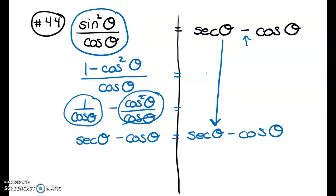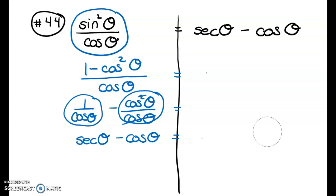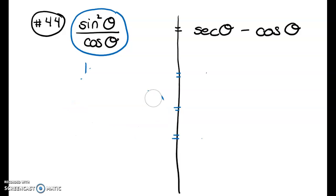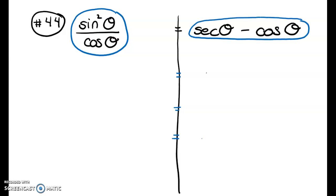Now I'll erase my work and show that this same example can be verified by working the right-hand side instead. Starting with secant θ − cosine θ, I convert secant to 1/cosine θ. There isn't much to do besides the actual subtraction.